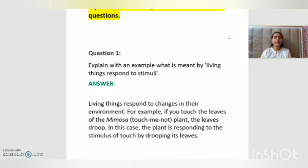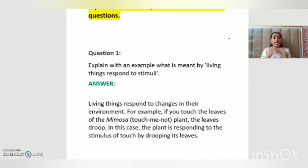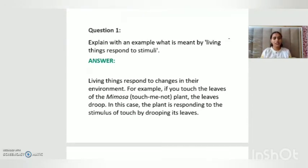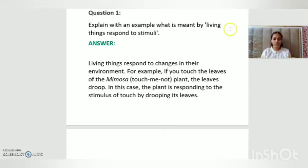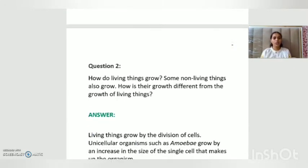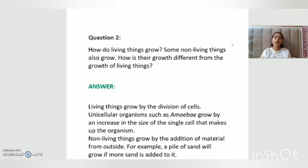D part, question number one: explain with an example what is meant by 'living things respond to stimuli.' The answer is: living things respond to changes in their environment. For example, there is one leaf known as the mimosa or touch-me-not plant — when you touch it, the leaves droop. In this case, the plant is responding to the stimulus of touch by drooping its leaves.